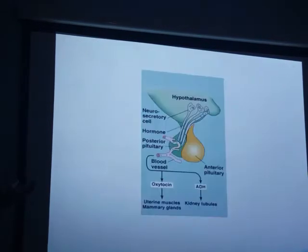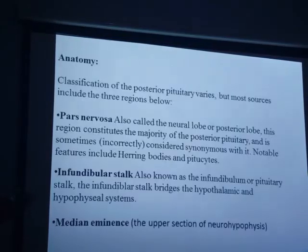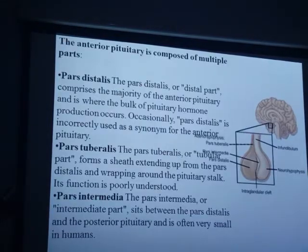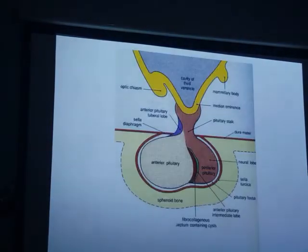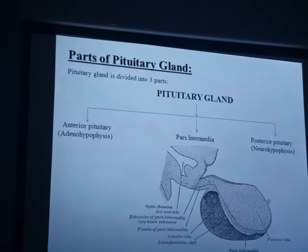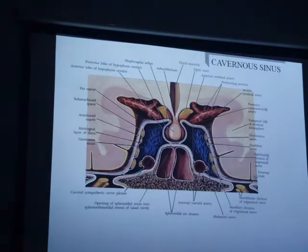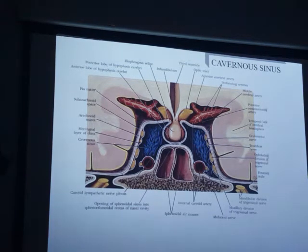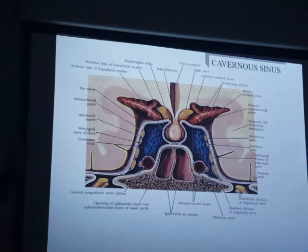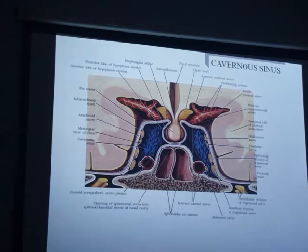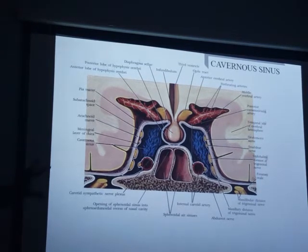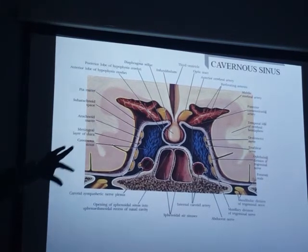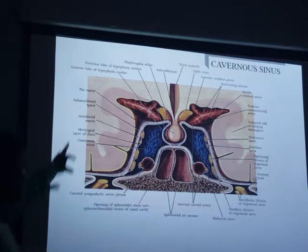This slide is very important from an exam point of view — it explains the relations of the pituitary gland. You must know the upper, superior, anterior, collateral, and inferior relations, and the structures related. You must also look into the labelling.